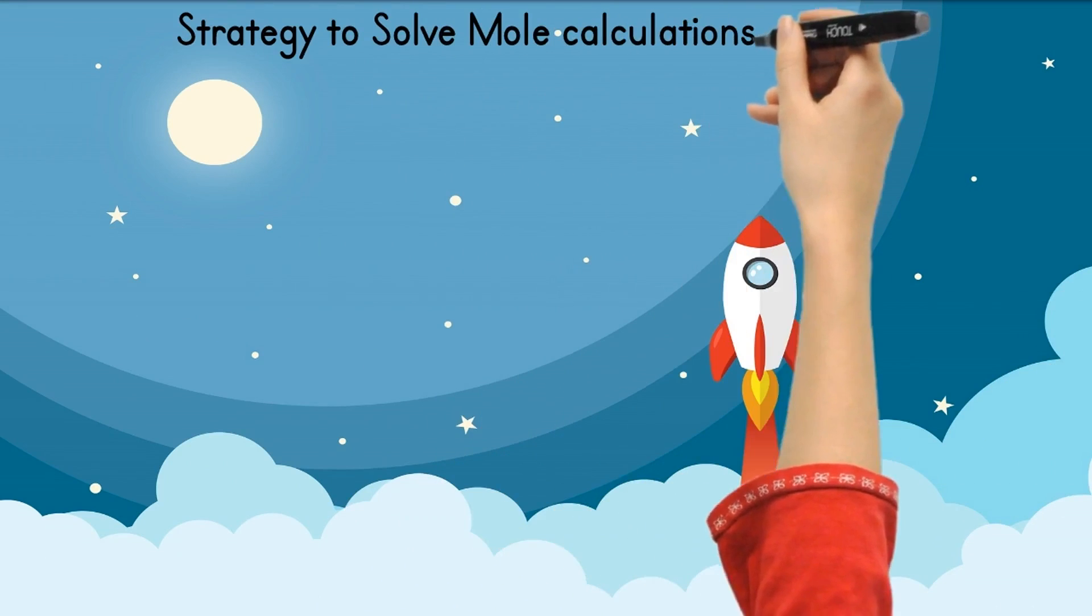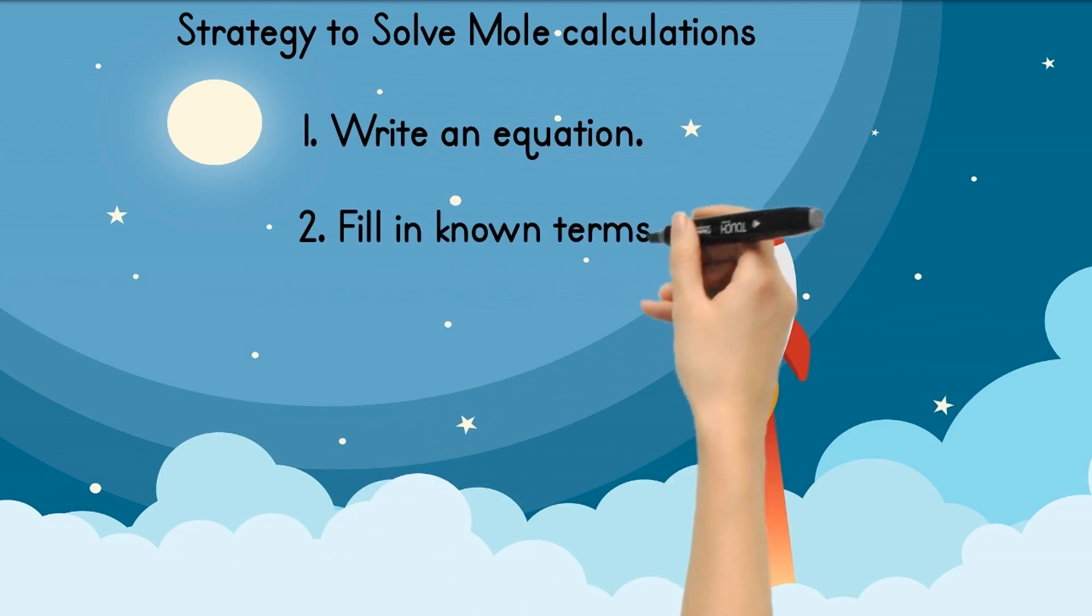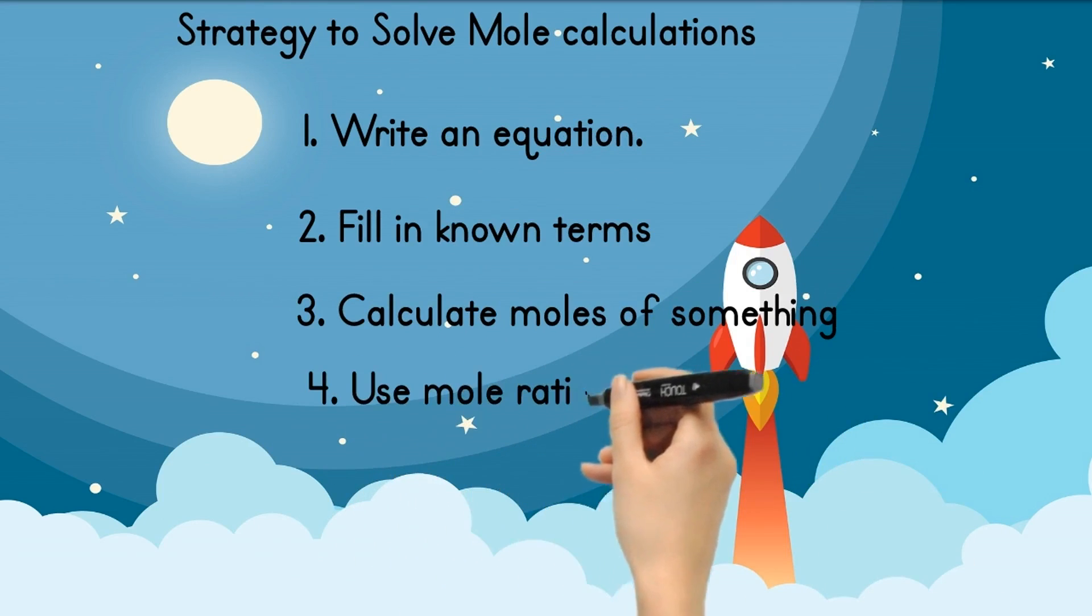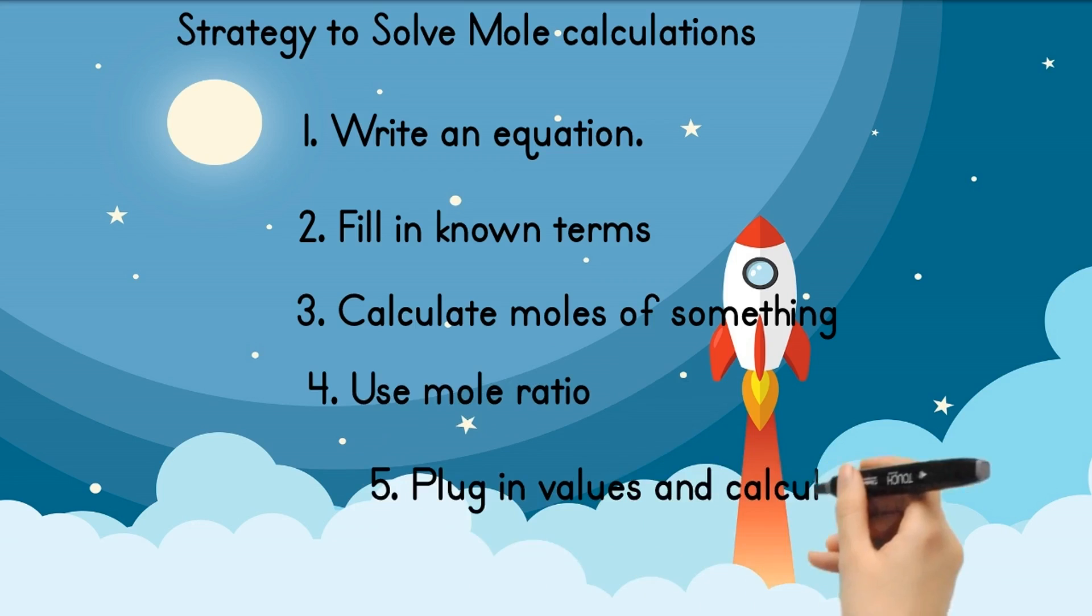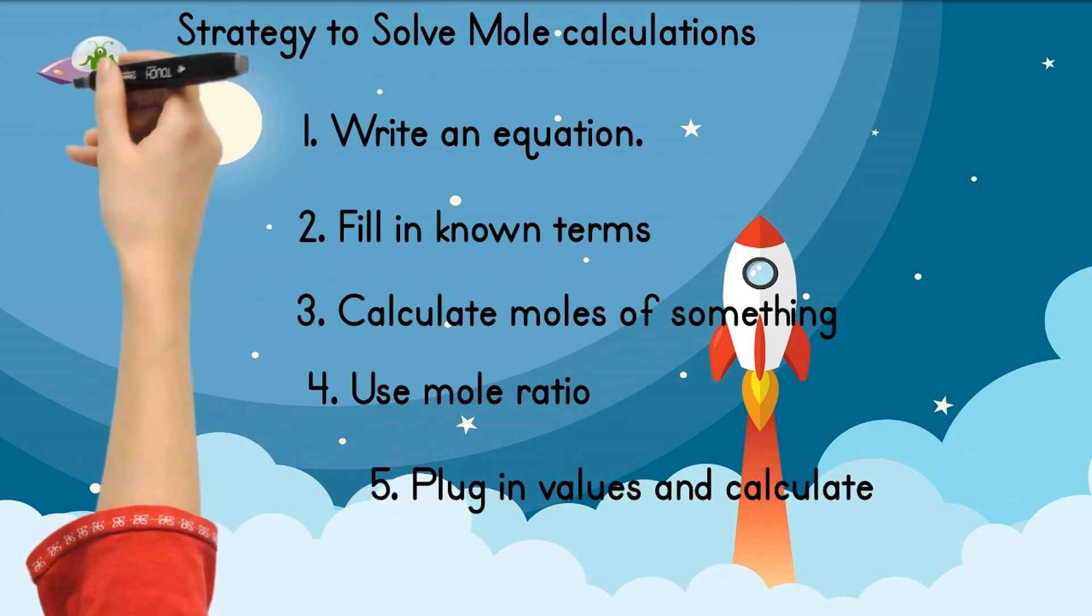There is a five-step strategy to solve complicated mole calculations. First, decide what to calculate and write an equation. Then add known terms. Third, calculate the moles of something given in the question. A diagram may help you here.